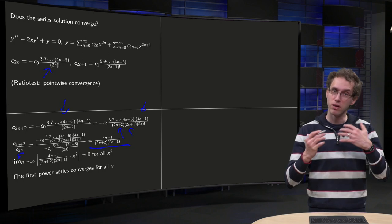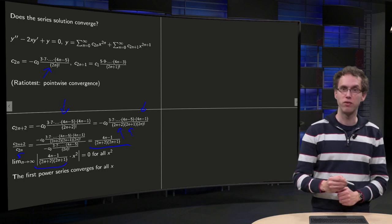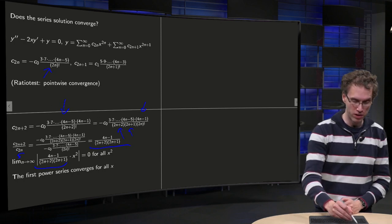So if you execute the ratio test, you get the quotient over here. From the x to the power 2n+2 over x to the power 2n, you are left with an x squared.